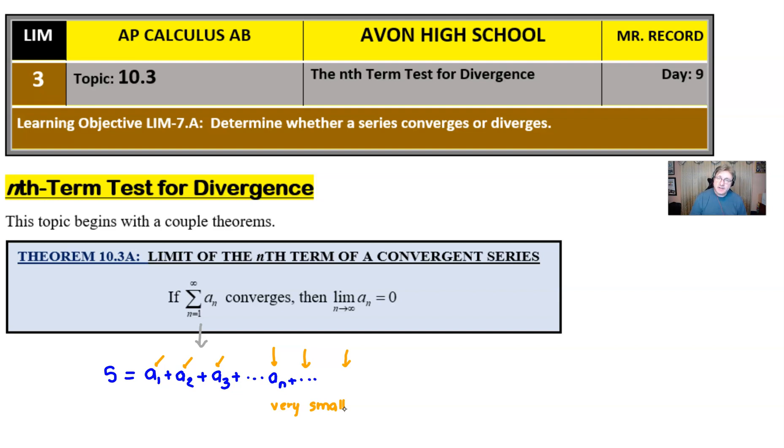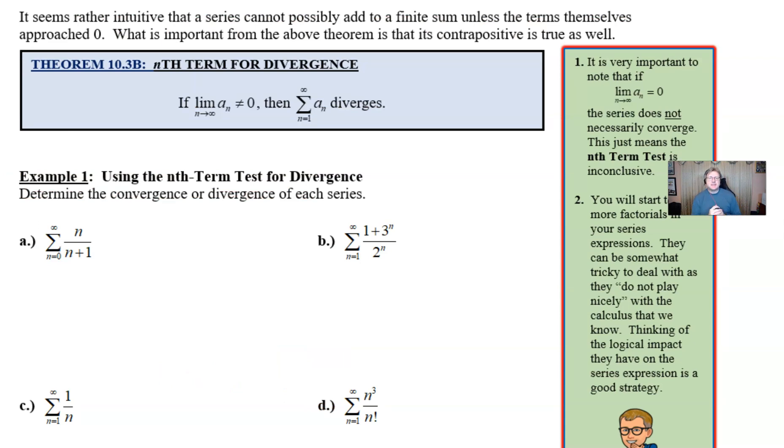Now that's not the nth term test for divergence. It sets up the nth term test for divergence. So as I said, it seems maybe intuitive that a series cannot possibly add to a finite sum unless the terms themselves approach zero. What's important from that theorem that we just talked about is that its contrapositive is true. Remember what a contrapositive is. For an if-then statement, you do two things: you switch the if and the then, and you negate both. So we have if the former conclusion is opposite or not equal to zero, then our series is the opposite of converge, which is diverge. And this is the nth term test for divergence. And I cannot emphasize enough the name is the nth term test for divergence.